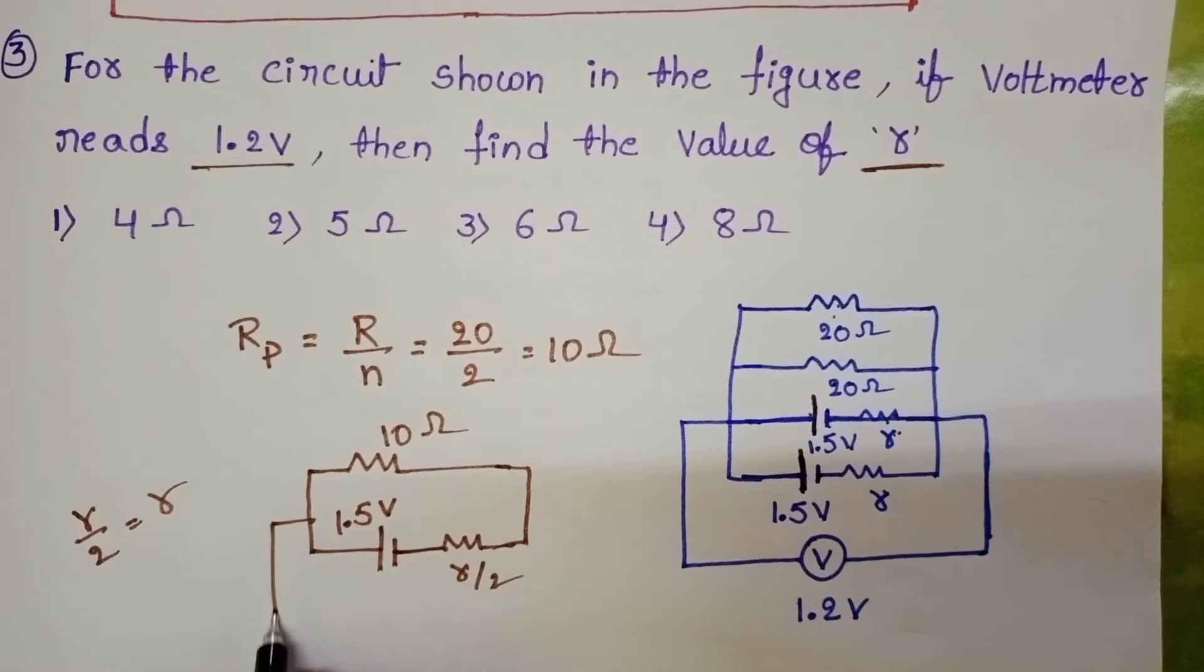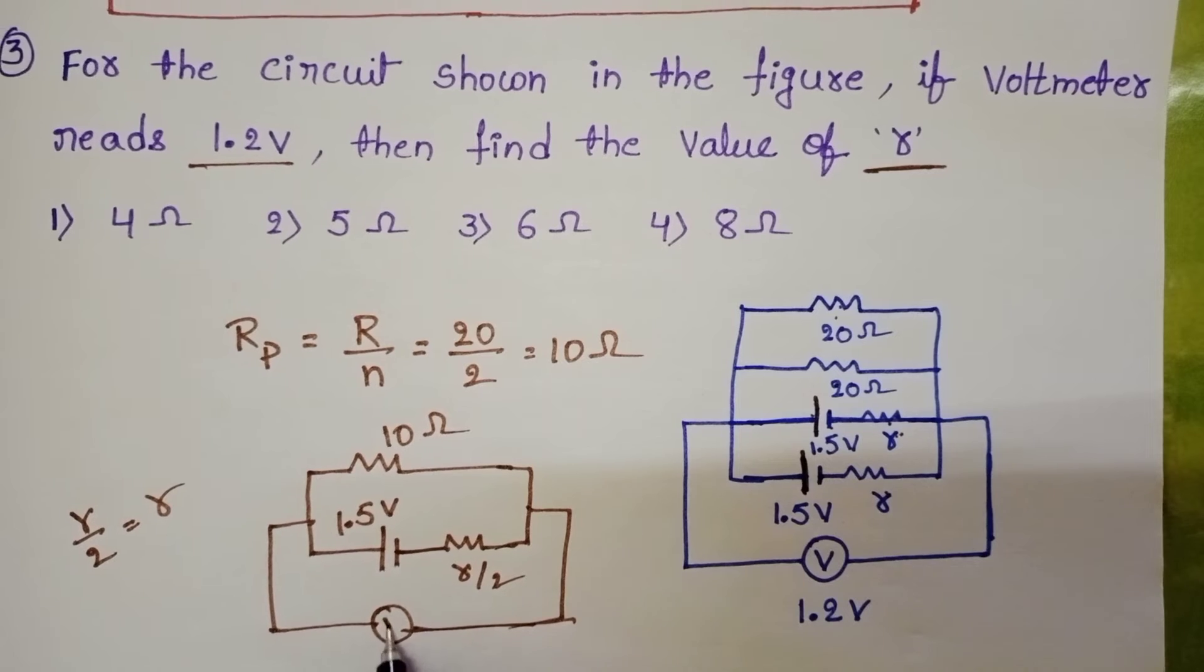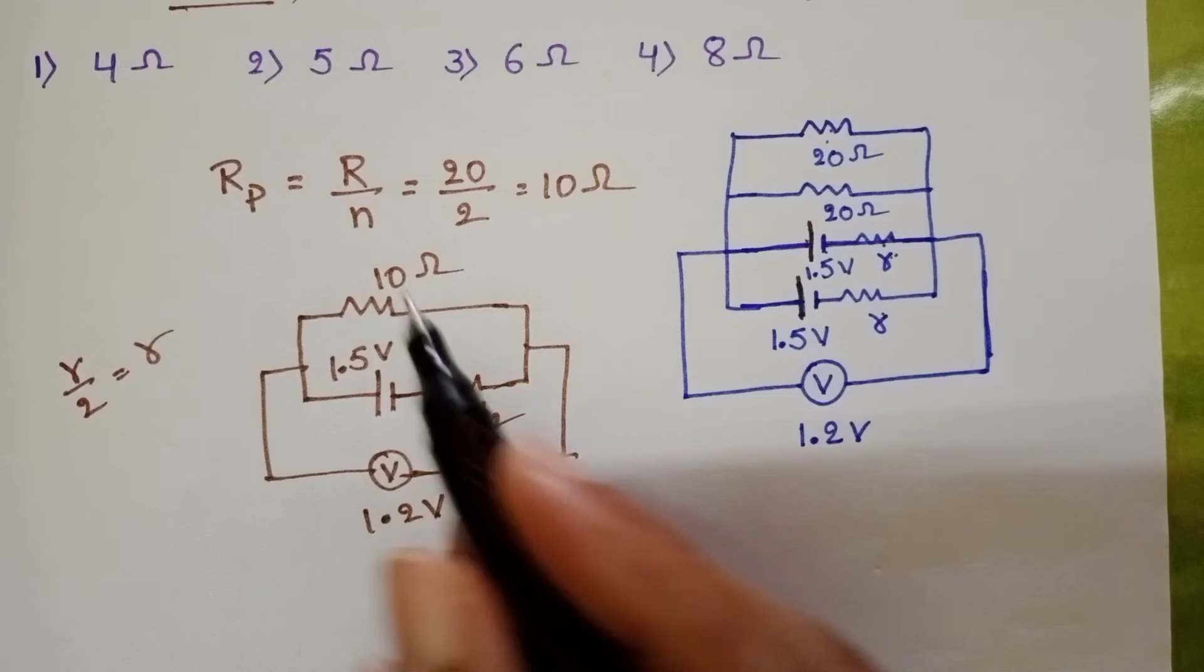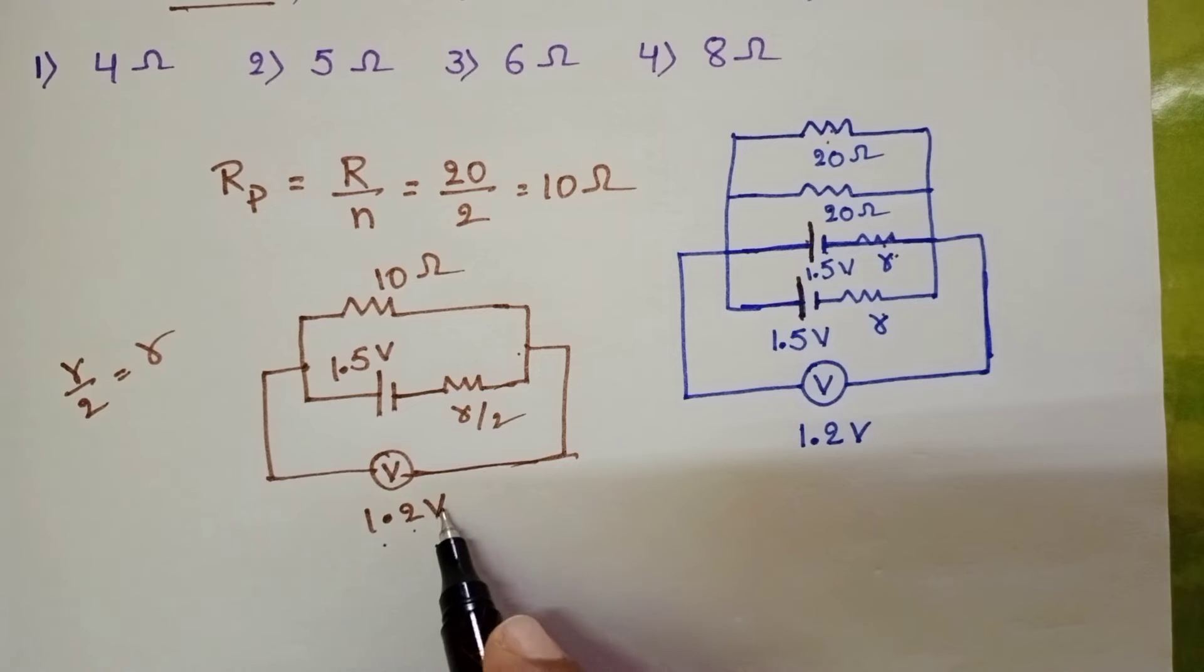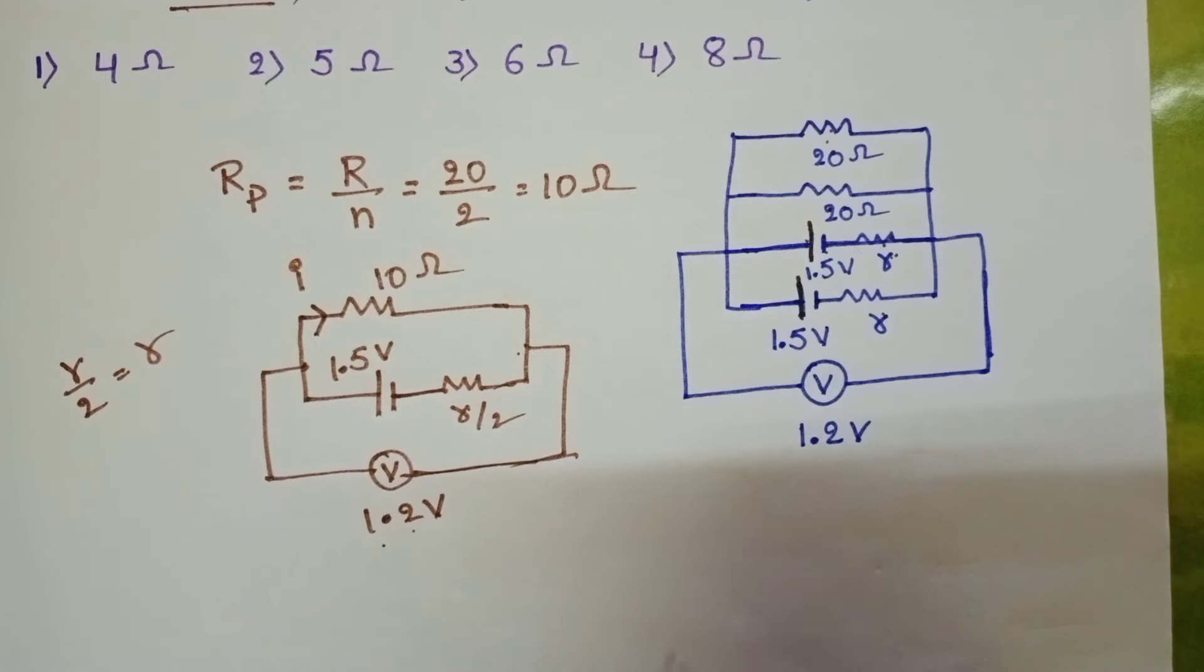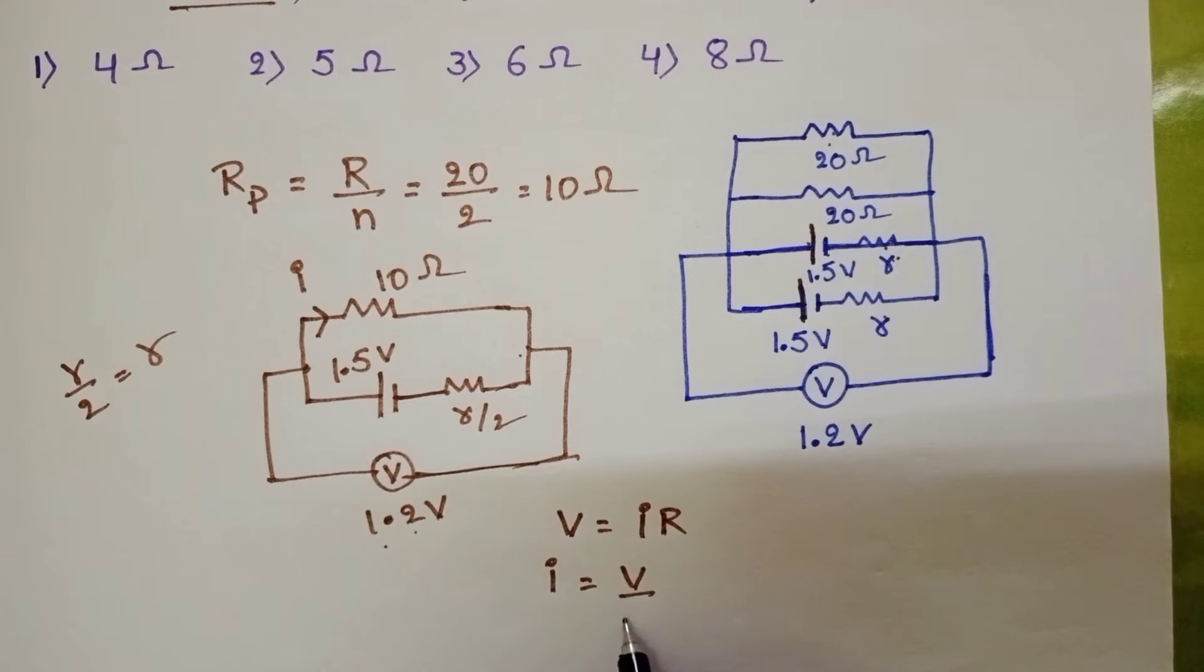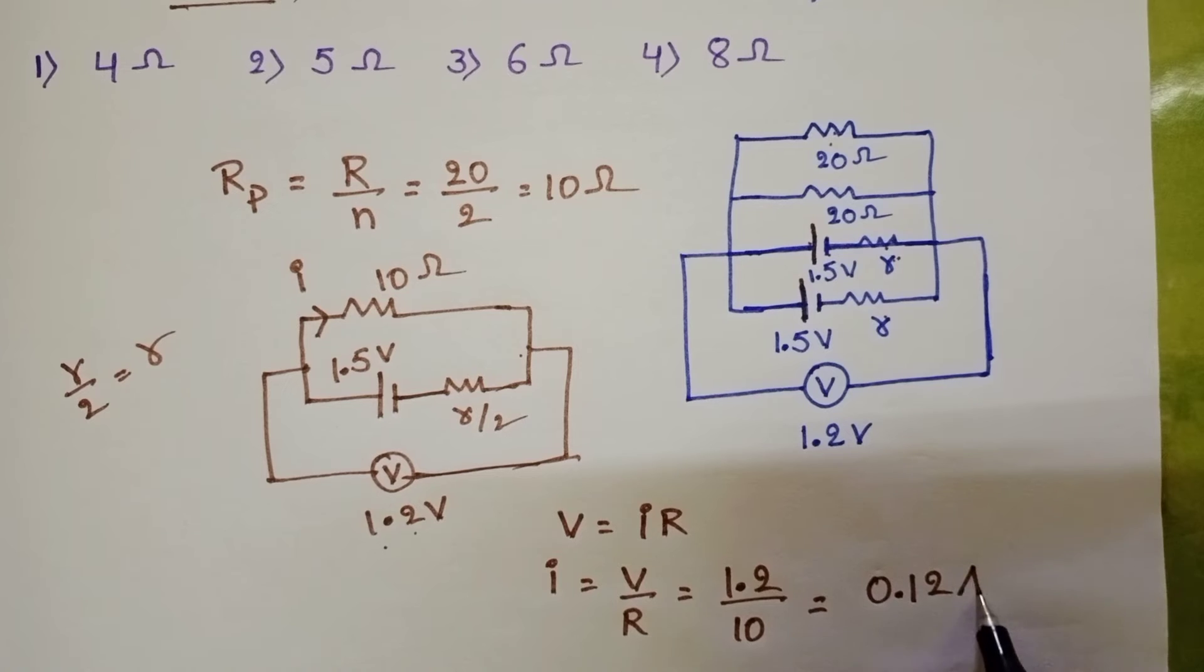Now voltmeter is connected in parallel. This voltmeter reads 1.2 volt. Now the voltage across 10 ohm resistor is 1.2 volt. The current passing through this resistor, we want V equals IR, and from this I equals V by R. 1.2 by 10 that is equals to 0.12 ampere.